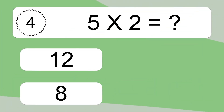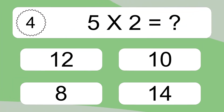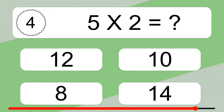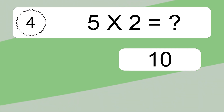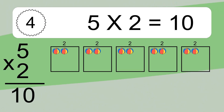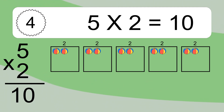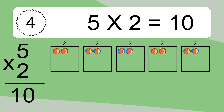5 times 2 equals what? We have 5 boxes, and each box has 2 colorful balls inside. If you count all the balls in all the boxes together, you will have 5 times 2 balls. This equals 10 balls.